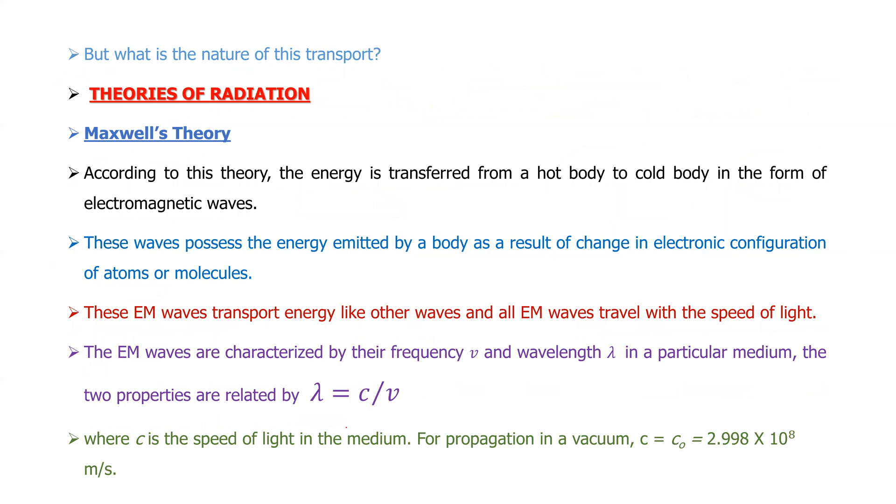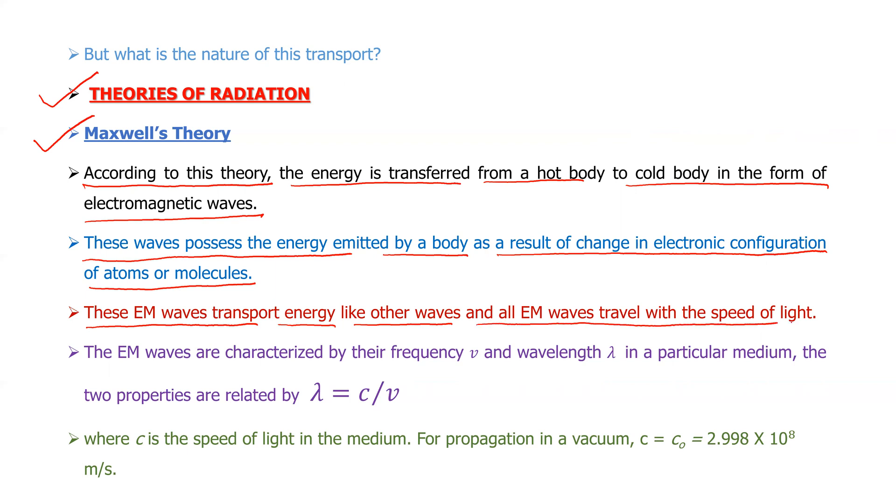Now, what is the nature of this transport? How are these radiations transported? There are different theories of radiation. The first one is Maxwell's theory. According to this theory, the energy is transferred from a hot body to the cold body in the form of electromagnetic waves. So here we are talking about the wave nature of the material. These waves possess the energy emitted by a body as a result of change in its electronic configuration of atoms or molecules. These electromagnetic waves transport energy like other waves and all electromagnetic waves travel with the speed of light.